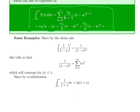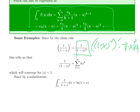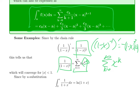The derivative of 1 over (1 minus x), which is (1 minus x)^(-1), is 1 over (1 minus x)^2 — using the chain rule. That tells us that 1 over (1 minus x)^2 has a power series which is just the derivative of the power series for 1 over (1 minus x). The derivative of x^k is k times x^(k-1). This converges when the absolute value of x is less than one, and checking the endpoints shows it doesn't converge there.